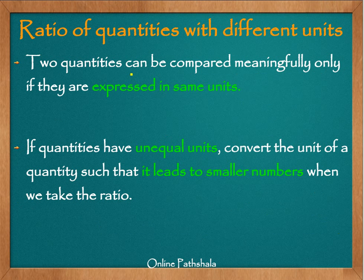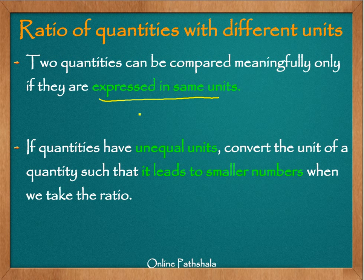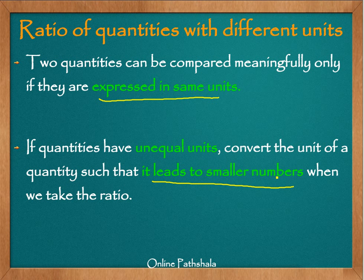Let us recapitulate what we learned from this example. Two quantities can be compared meaningfully only if they are expressed in the same units — this is very important. If two quantities are given in different units, we must convert them to the same unit first. As a second point, when converting units, do so in a way that leads to smaller numbers when taking the ratio, for convenience in calculation.